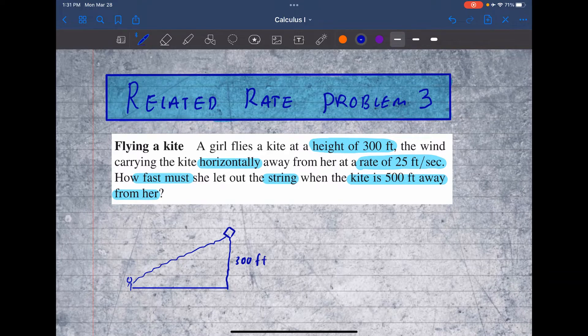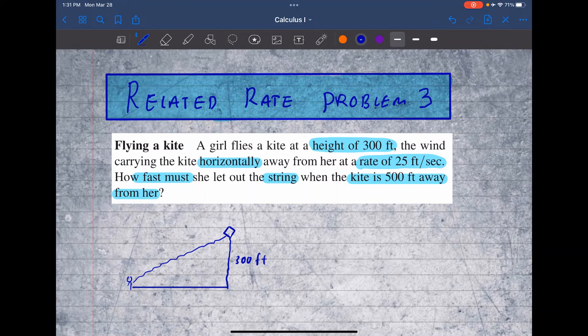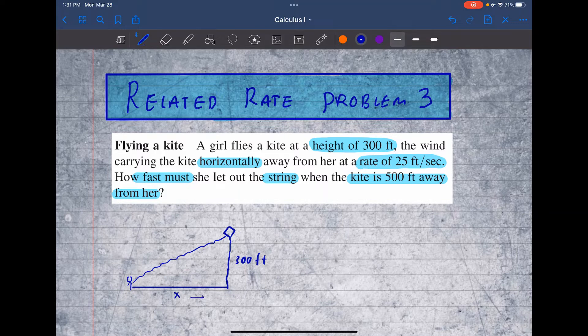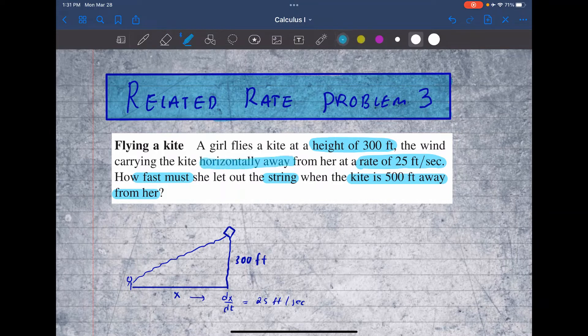So you can see, let's label some components. Let's call this the x direction. So this is the horizontal direction. The kite is flying away from her. So this rate dx/dt is going to be 25 feet per second. So you see this is the horizontally away from her. That's this component right here.